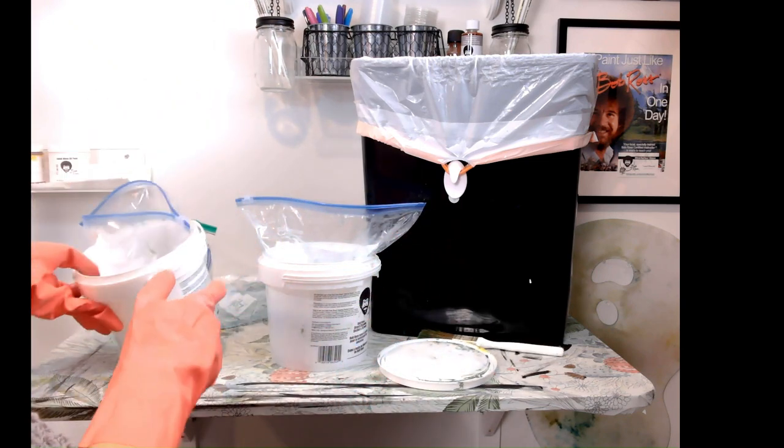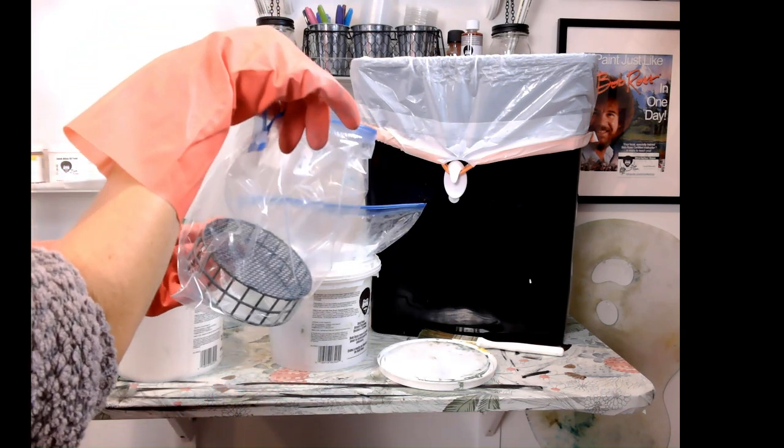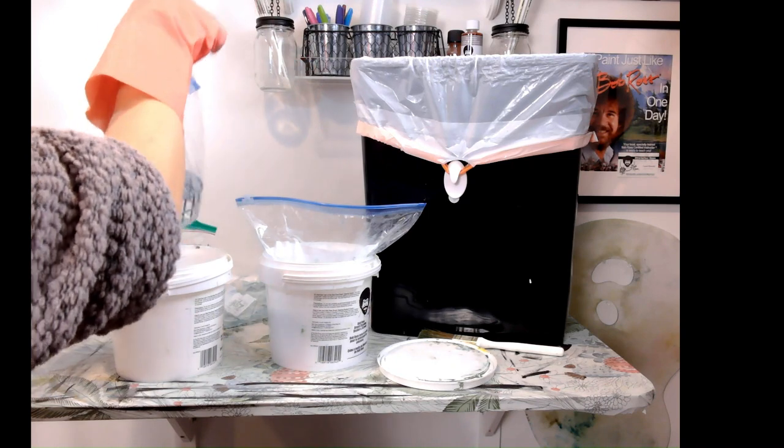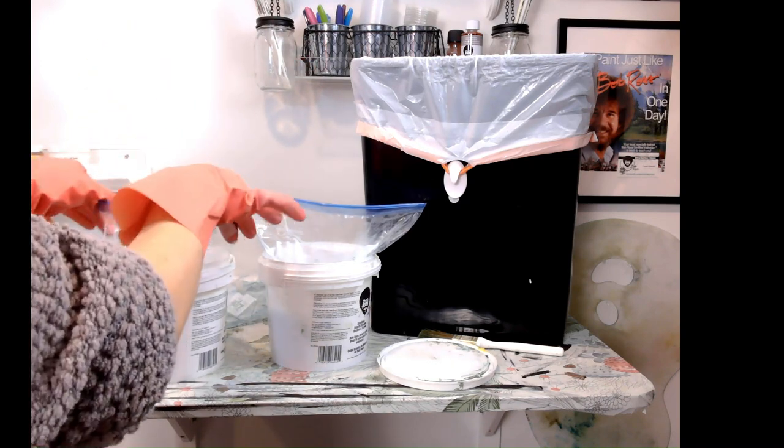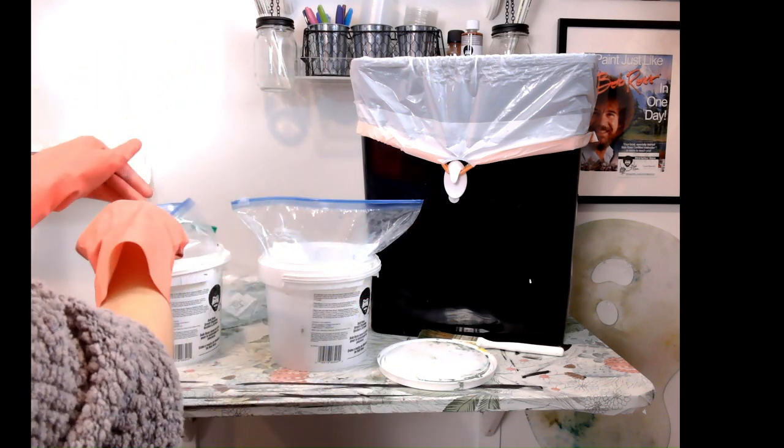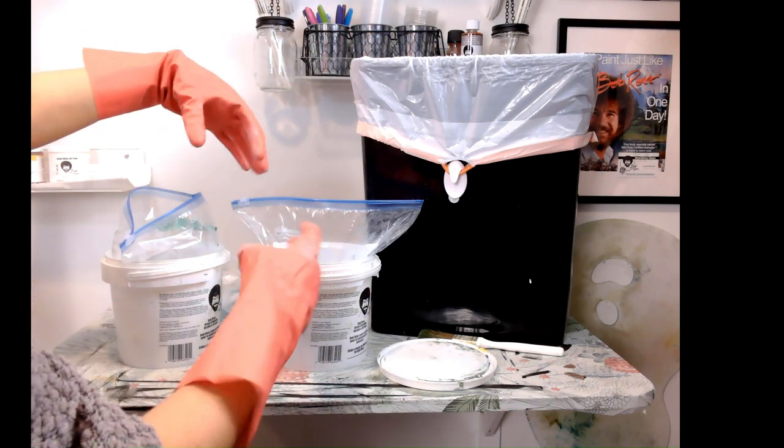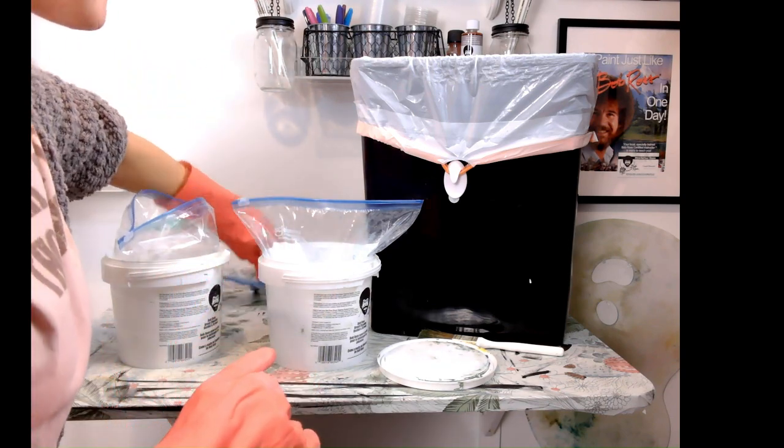So what I do is I have two buckets and I go back and forth. I have a ziploc bag that I put my screen into, and then I put it into my bucket. Then I take my paint thinner and I pour it into the new ziploc bag.